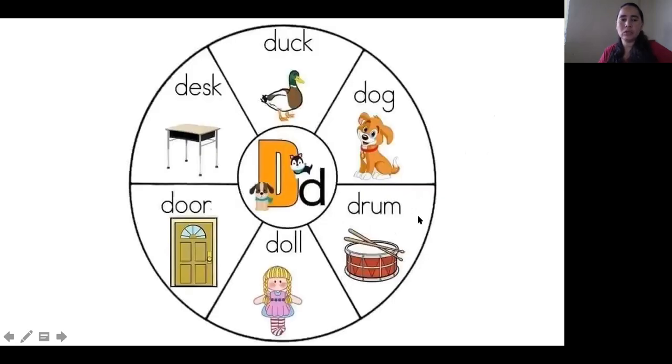Now let's continue studying some of the words that start with the letter D. This is dog. Good. This is dog. This one is drum. Doll. Door. Desk.